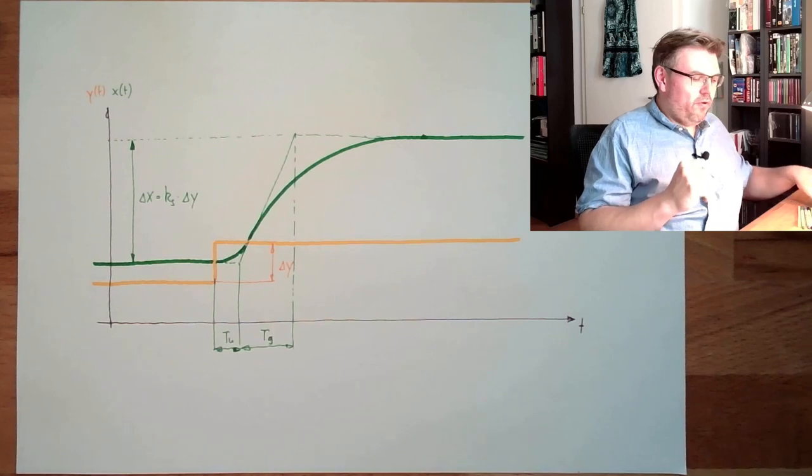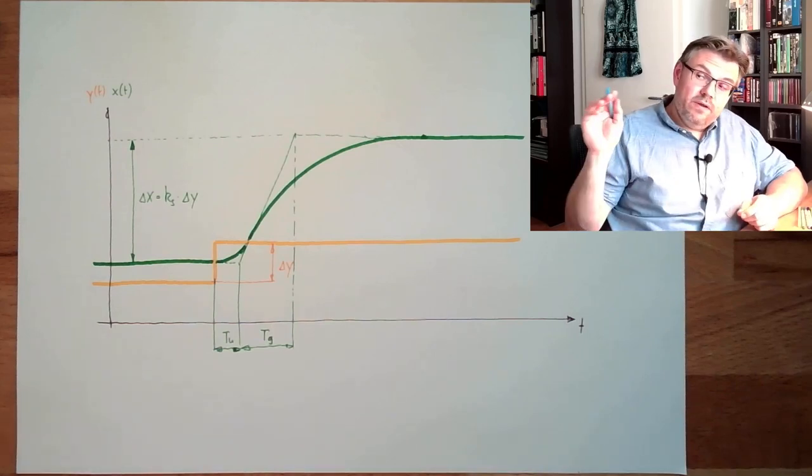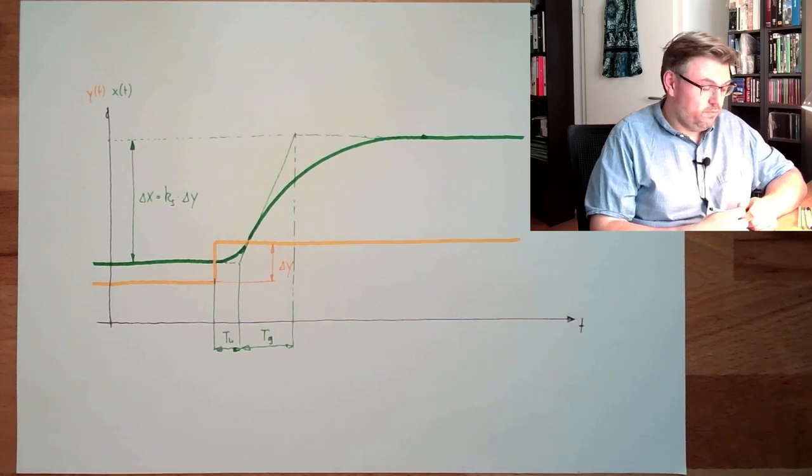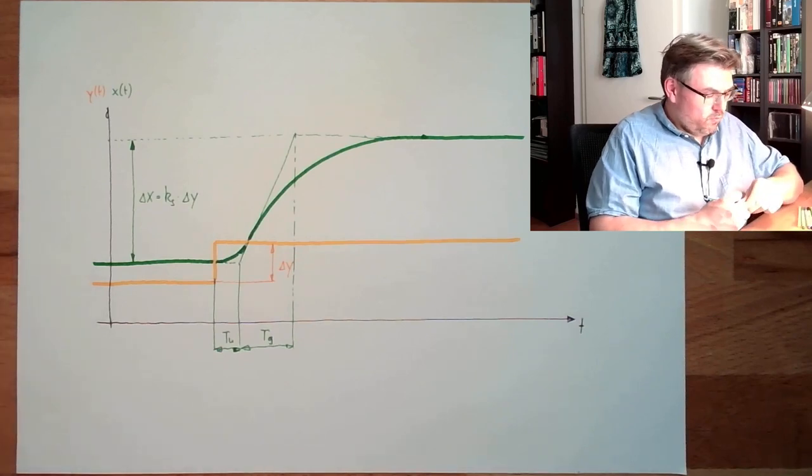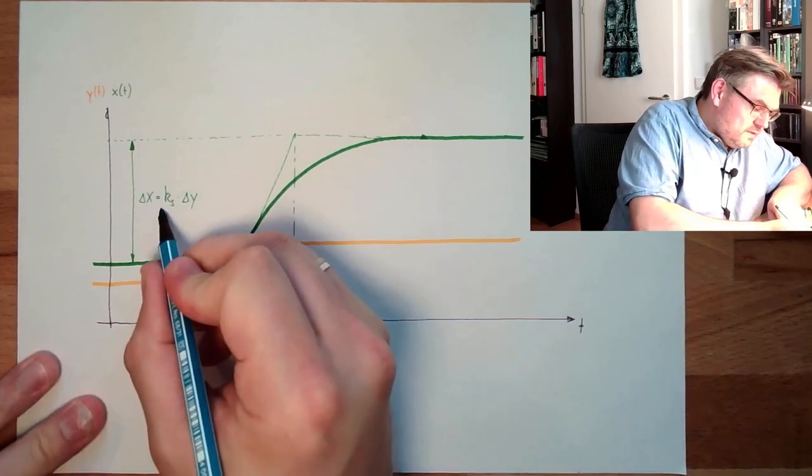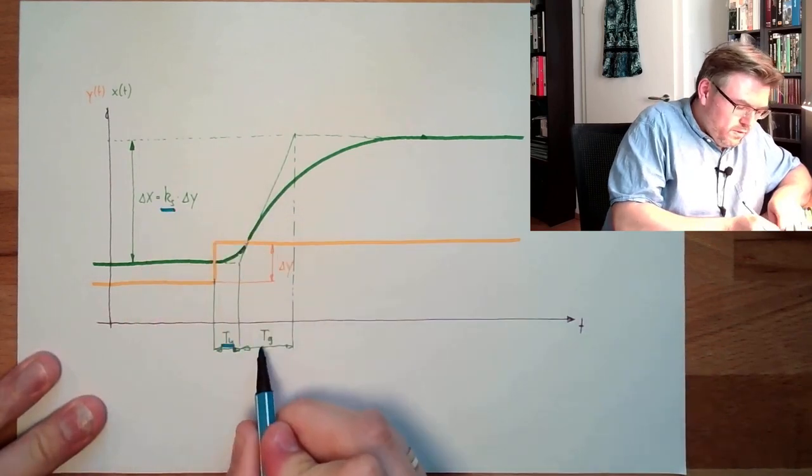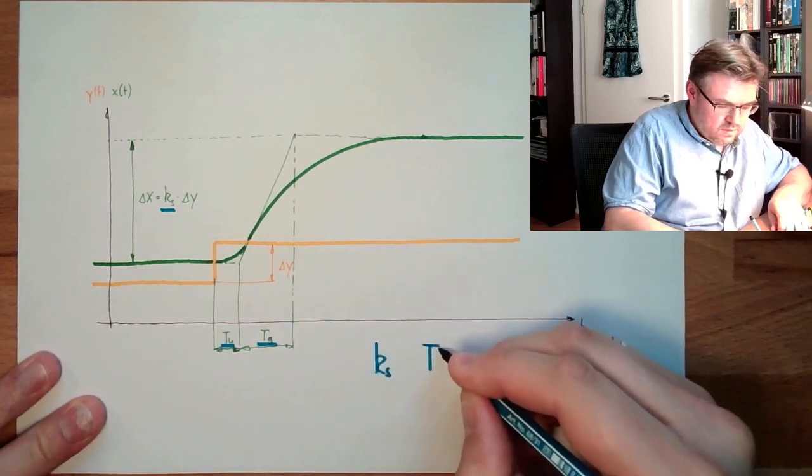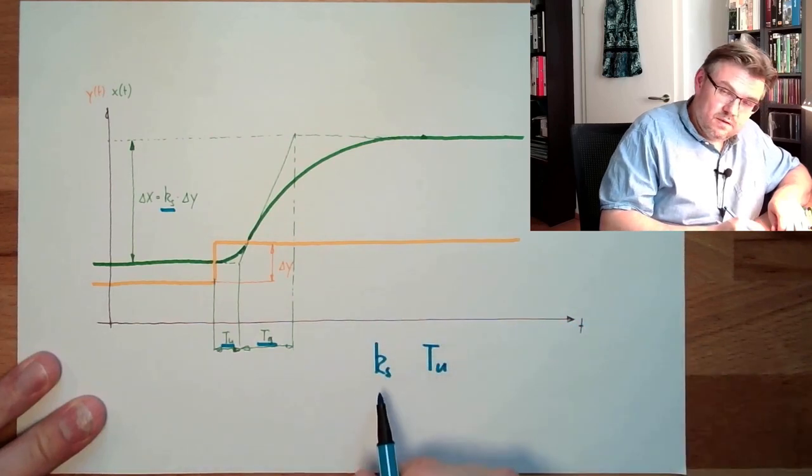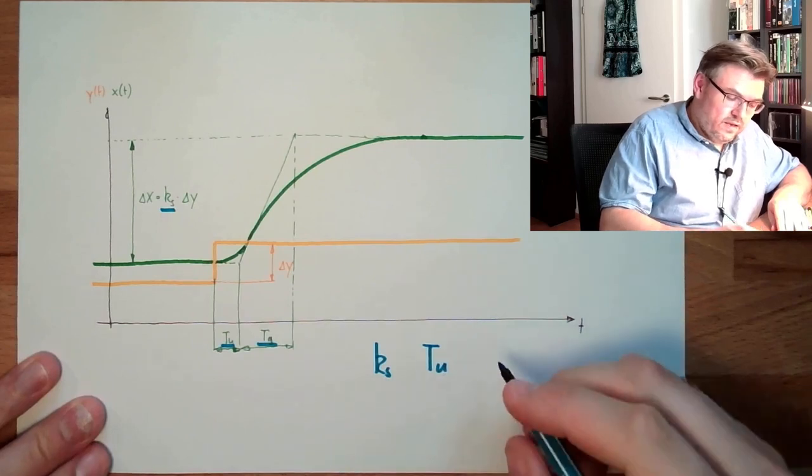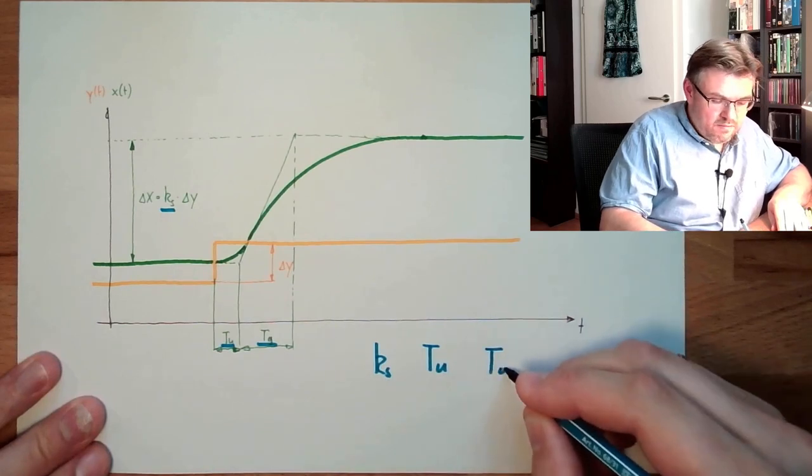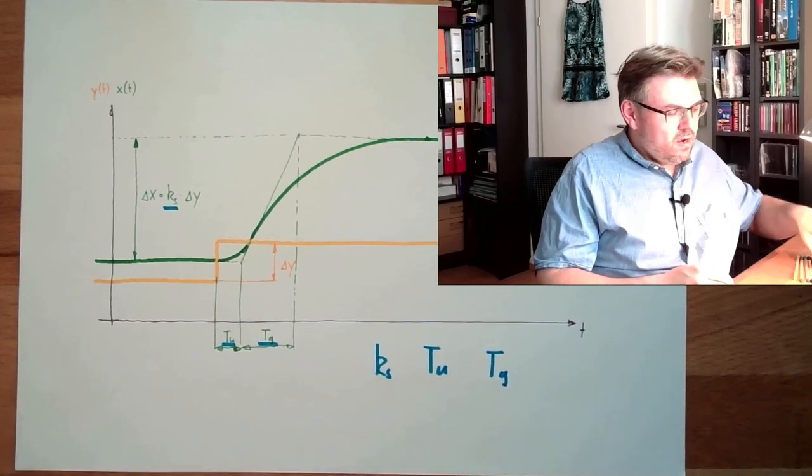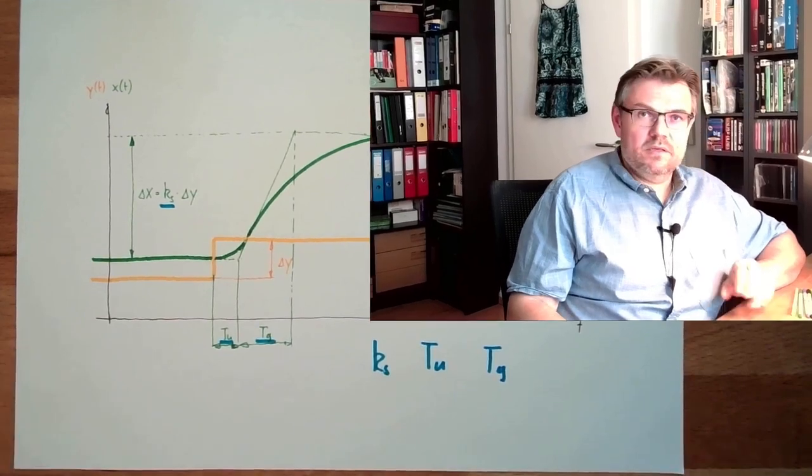And those are the parameters the three people, Chien, Horner and Reswick, are taking. So they want to have this Ks, they want to have the TU and the TG. And they say with Ks, the gain factor of the system, TU the delay time, and the rise time TG, with these three parameters we are going to determine what the controller parameters need to be.